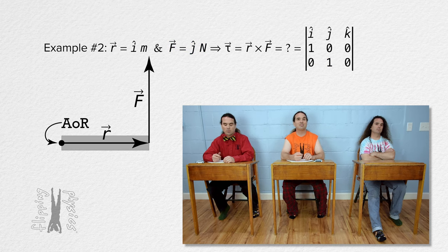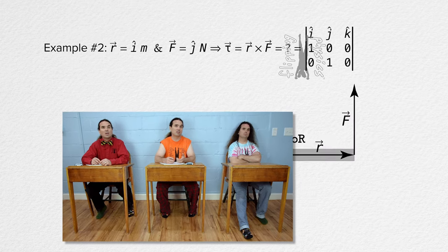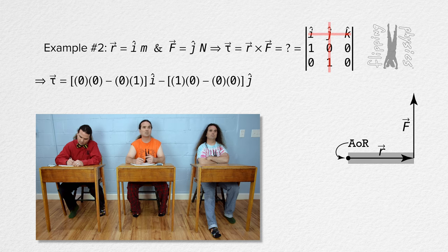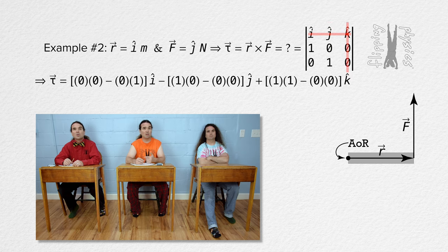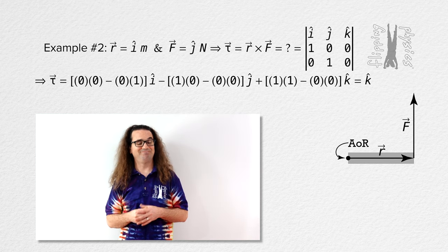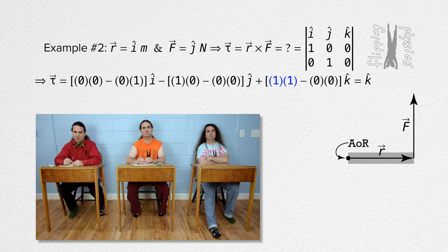We do not have to write down all of the 2 by 2 matrices. In front of the i unit vector: zero times zero minus zero times one. Subtracting the j unit vector quantity: one times zero minus zero times zero times unit vector j. Plus one times one minus zero times k. That works out to be just unit vector k.